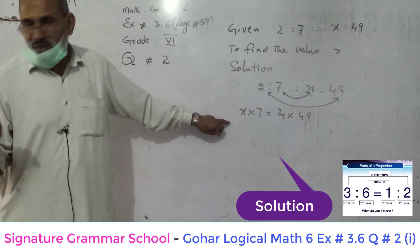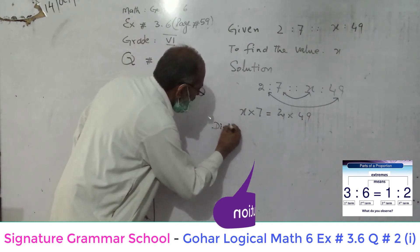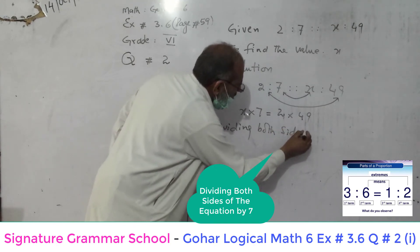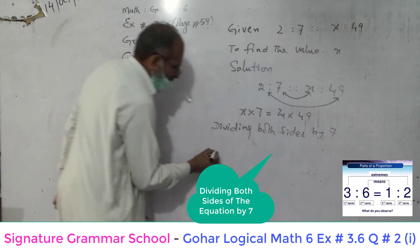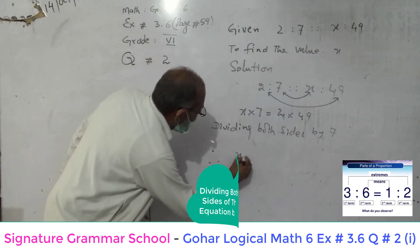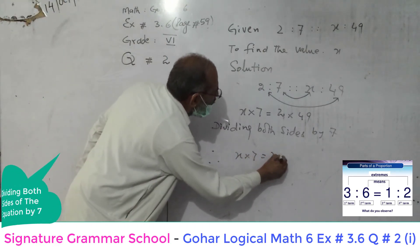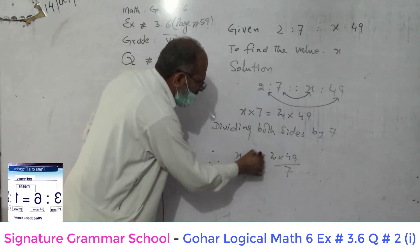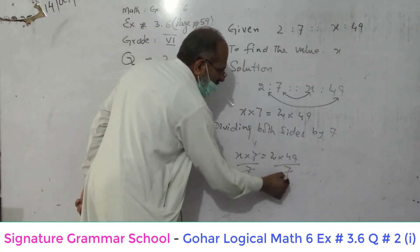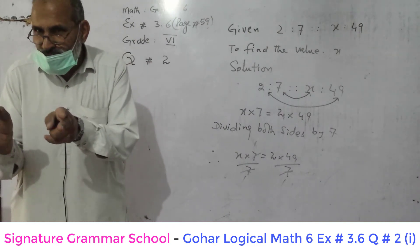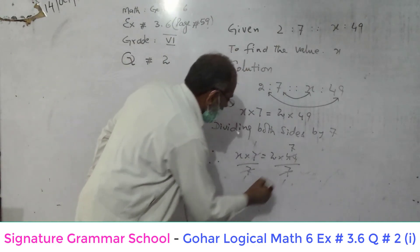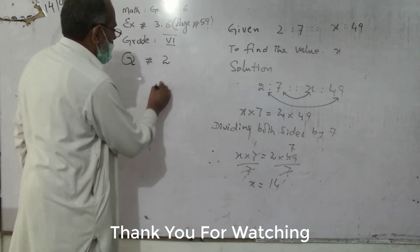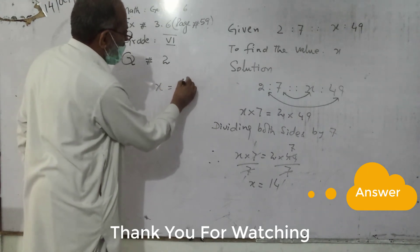Which value is multiplying with x? 7. So dividing both sides by 7. This means x into 7 is equal to 2 into 49. So x is equal to 14.